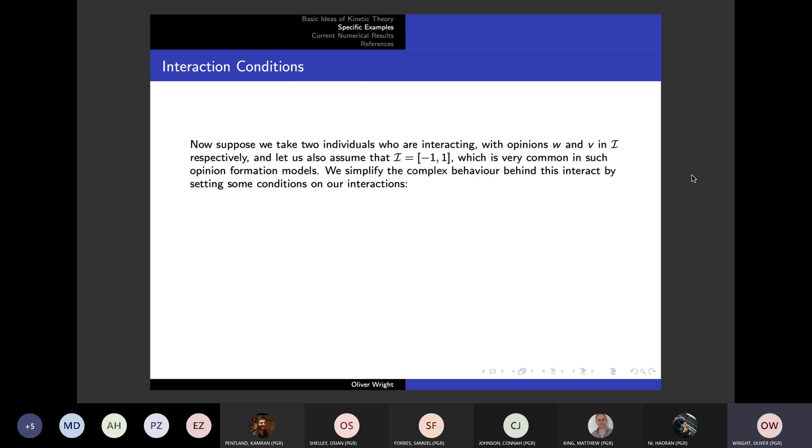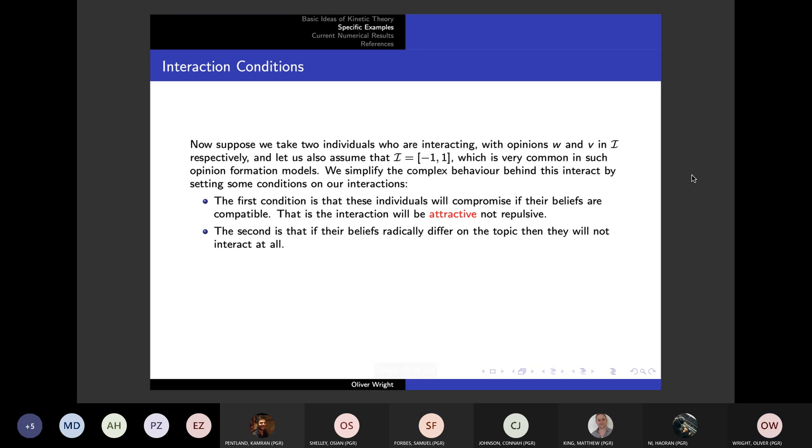We can place some conditions on how we want them to actually interact. The first condition is that we want these interactions, instead of acting like bouncing off each other in gases, to act more like they are pulling each other towards each other, compromising on their beliefs. It's very rare that two people will interact and will end up more extreme in opposite directions than they started.